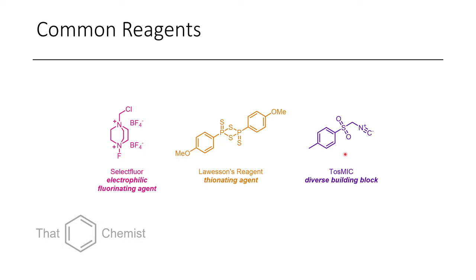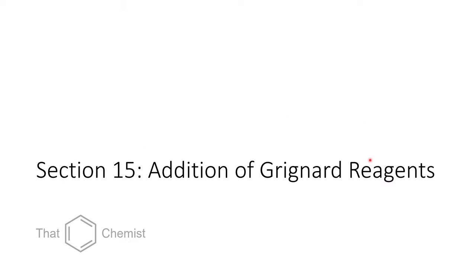The last compound I wanted to note was TOSmic, which is this tosyl isocyanide, and this reagent is good at converting ketones into nitriles, as well as converting aldehydes into imidazoles and oxazoles. And so with that, let's get into today's material, the addition of Grignard reagents.